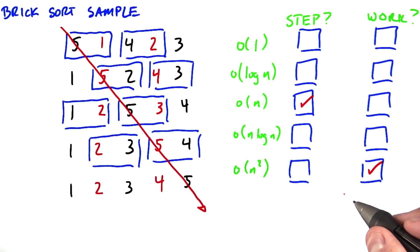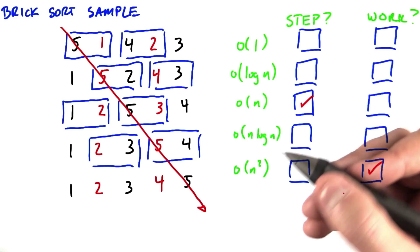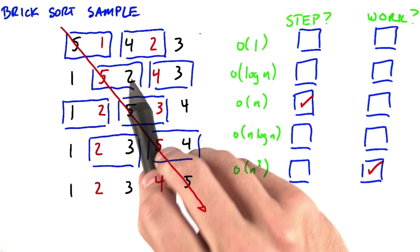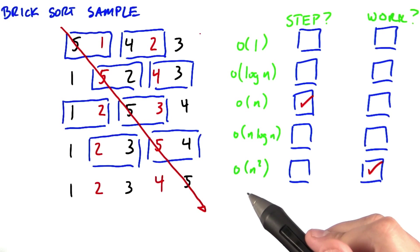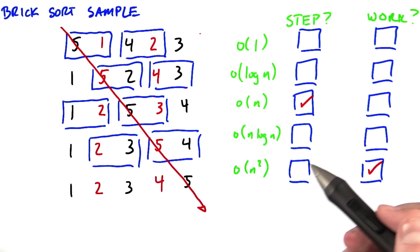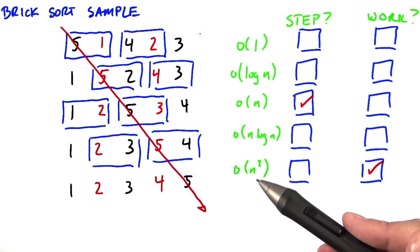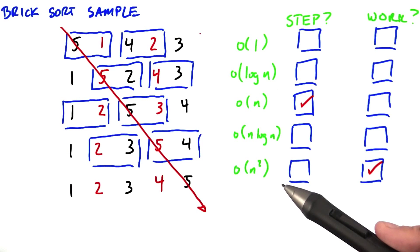This is not a particularly efficient sort. We'd like to be able to do better than order of n squared steps. That being said, it's kind of a neat parallel algorithm because we can see that within a step, each one of these comparisons can proceed completely in parallel. So at least, even though this isn't the most efficient algorithm, it's at least one that exploits a lot of parallelism in its underlying structure.